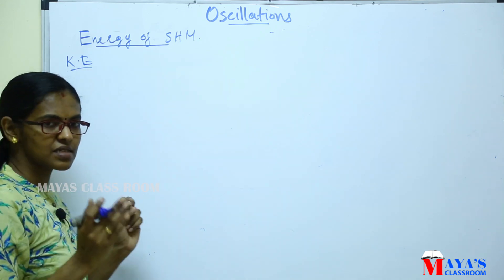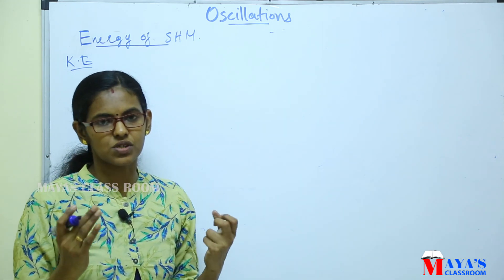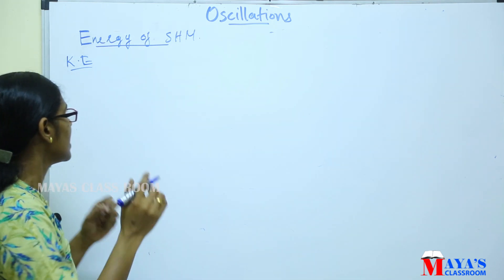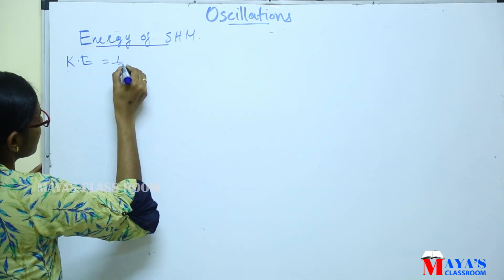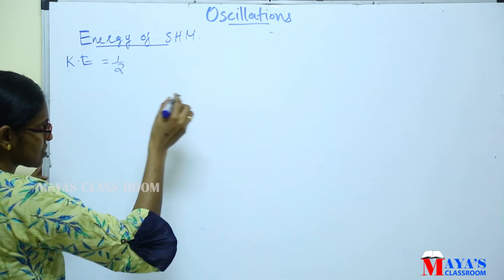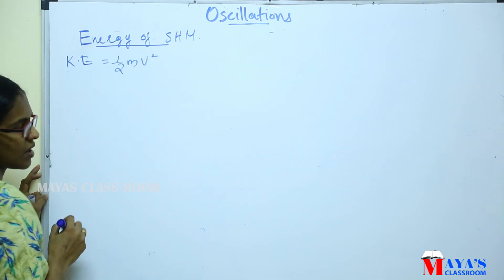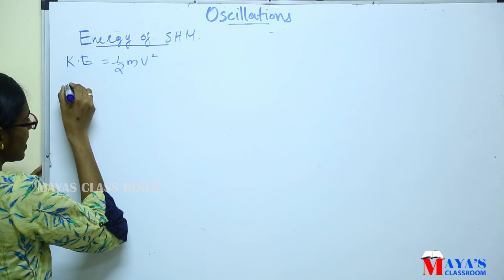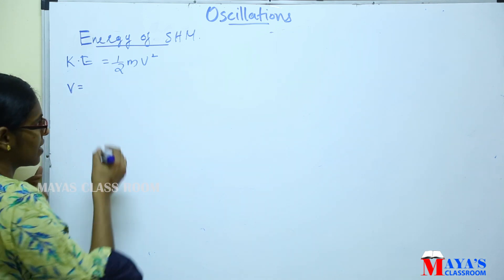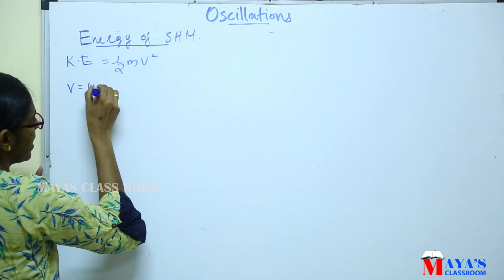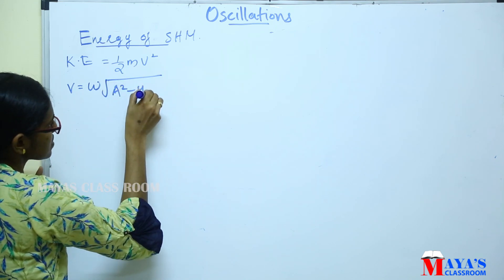We will discuss the energy of Simple Harmonic Motion by virtue of its motion. What is the kinetic energy? The kinetic energy is given by half mv², where the velocity in SHM is ω√(a²−y²).